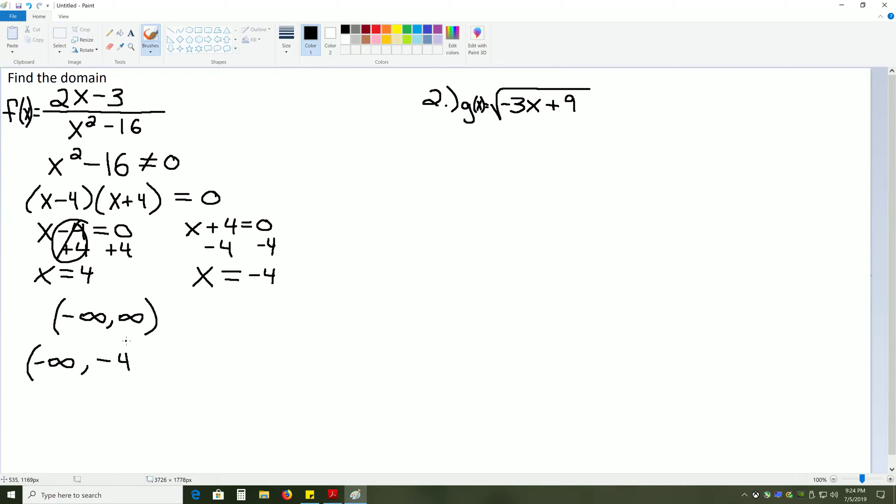And we'd say that that number cannot be included, so we put a parenthesis with it rather than a bracket. And then we put a union sign to say that this is continuing, and we're going to pick up right where we left off at that negative 4, and continue until the next break in our number line, which occurs at positive 4. Positive 4 also will not work. All the numbers between negative 4 and positive 4 will work, though.